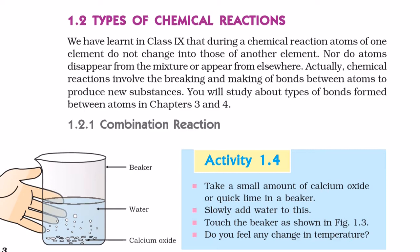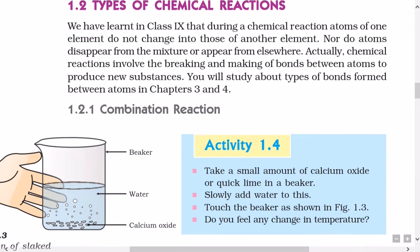We have learnt in Class 9 that during a chemical reaction, atoms of one element do not change into those of the other element, nor do atoms disappear from the mixture or appear from elsewhere. Actually, chemical reactions involve the breaking and making of bonds between atoms to produce new substances. You will study about types of bonds formed between atoms in Chapters 3 and 4.